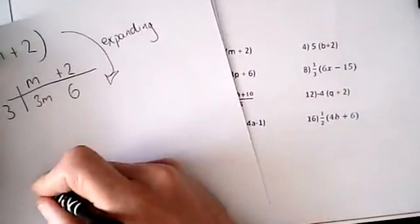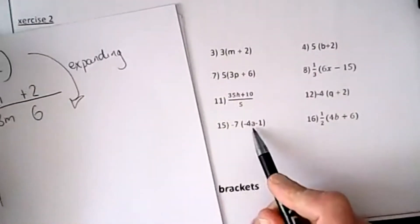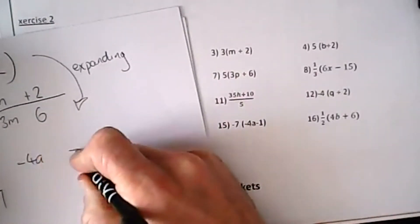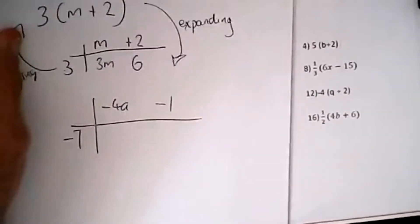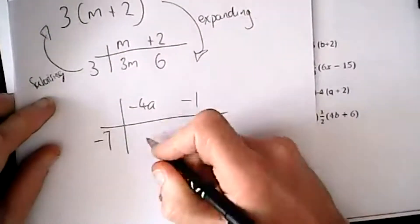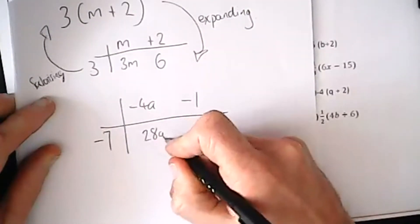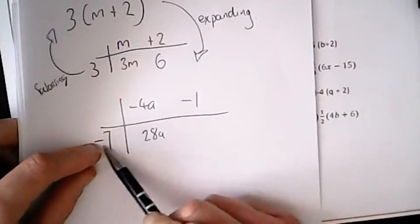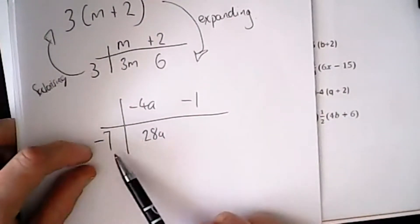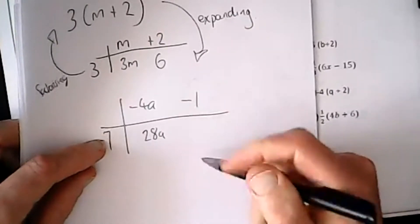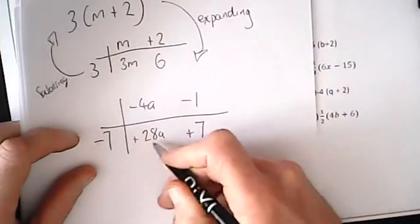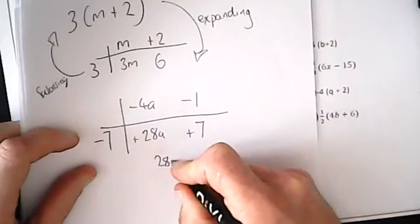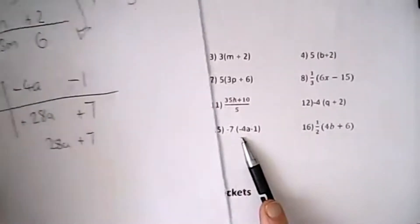Let's have a look at a more difficult one: negative seven bracket negative 4a minus 1. I'll write it out in the grid straight away. Seven fours are 28a. Now we've got two minuses multiplying together, so that's going to make a plus. Also, seven ones are seven, and again two minuses multiplying together makes a plus.